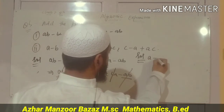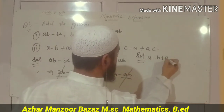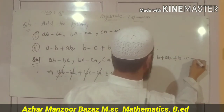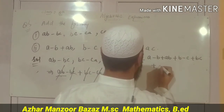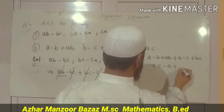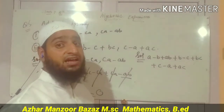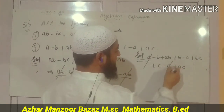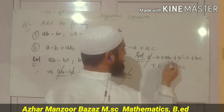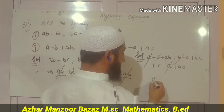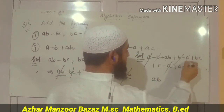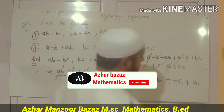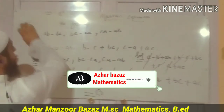Second question: a minus b, plus b minus c, plus c minus a. Like terms are added: a minus a cancels out, minus b plus b cancels out, ab terms — there is only one ab, minus c plus c cancels out, leaving bc and ac. The answer is bc plus ac.